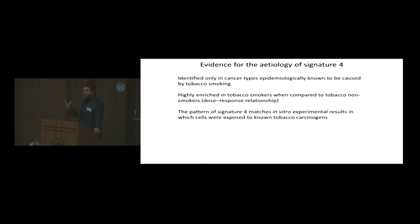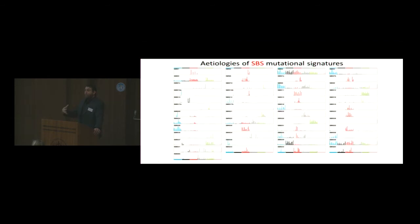The pattern of signature four matches in vitro experimental results in which cells are exposed to tobacco carcinogens. This has been confirmed over a number of in vitro models now. This is the type of evidence we like to have. We like to have some epidemiology, some associative dose response relationship, and some experimental results in being able to say this signature is caused by smoking. I cannot tell you how we've done that for every single one of these signatures, but I'm going to enumerate them. I'm going to list what we have found, and then tell you three recent stories.